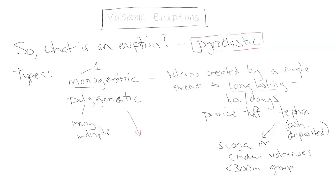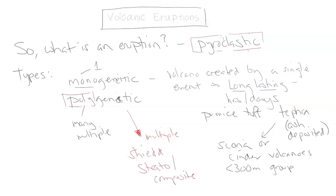Polygenetic refers to multiple ongoing eruptions over the course of an eruption cycle — it could be tens of years, thousands of years, or millions of years, depending on the volcano. There is a cycle and pattern of eruptions that will happen over time. These are generally associated with shield and strato or composite volcanoes.